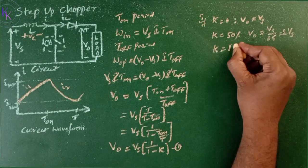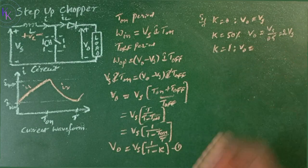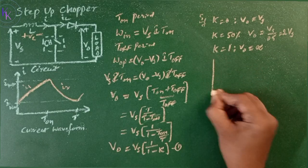If K equals 1, then V0 equals infinity. Let us show this in a graphical way.